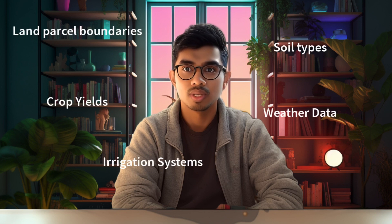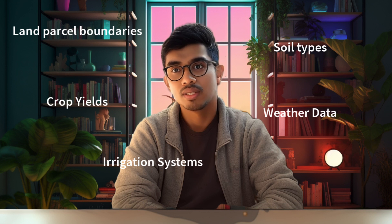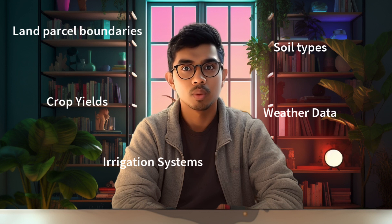What is GIS? GIS is a computer-based system for collecting, storing, managing, analyzing, and displaying spatial data. Spatial data is data that has a location on the earth's surface. GIS can be used to store a variety of spatial data including land parcel boundaries, soil types, crop yields, irrigation systems, and weather data.